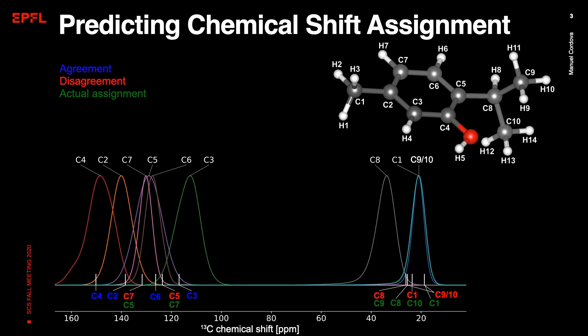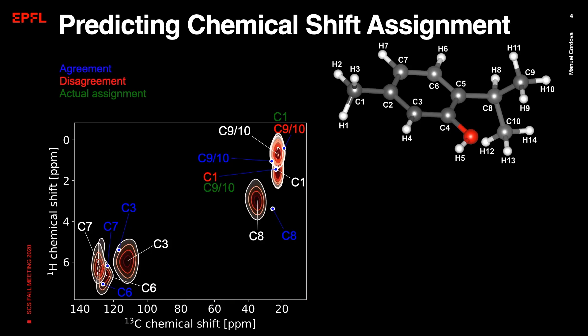Now for carbon, there are some ambiguities for 6 out of the 10 shifts obtained, and a big overlap between the different statistical distributions of shifts. But the main strength of NMR lies in multidimensional experiments, such as the proton-carbon heteronuclear correlation experiment, which we can simulate by correlating the shifts of bonded hydrogen and carbon nuclei. And if we do that, we see that we were able to lift some ambiguities, and now only the methyl groups are still ambiguous.